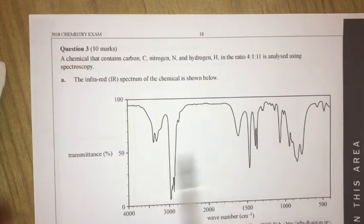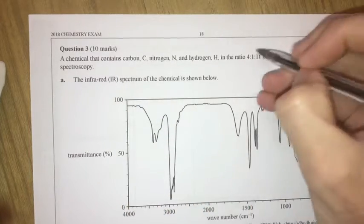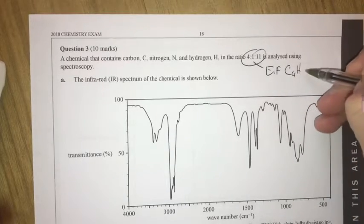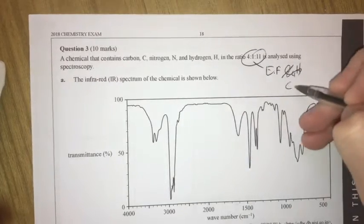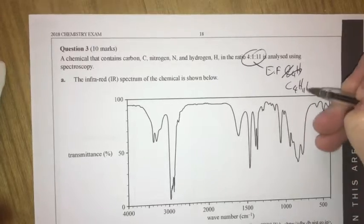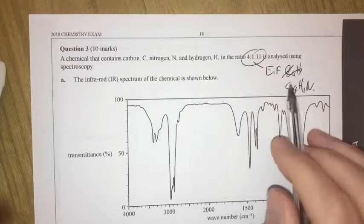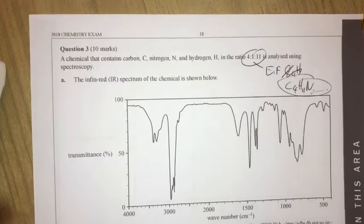Question 3 is a spectroscopy question. A chemical contains carbon, nitrogen and hydrogen. The ratio gives us the empirical formula C4H11N — that's 4 carbons, 11 hydrogens, and 1 nitrogen. The nitrogen is written in the middle here, which isn't the normal convention, but that's how they've presented it.